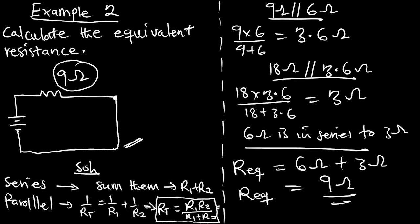The strategy is to tackle resistors two by two or three by three — identifying whether they are in series or parallel — using the reduction approach, and you'll be able to solve and get your equivalent resistance. Thank you for watching this episode; please subscribe to the channel, like, and share the video.